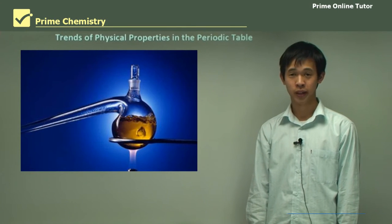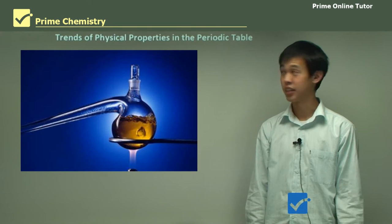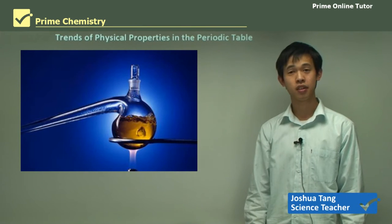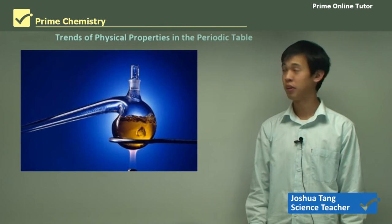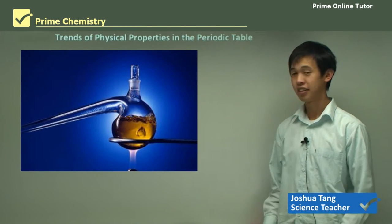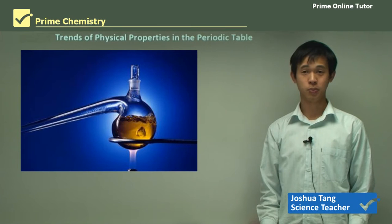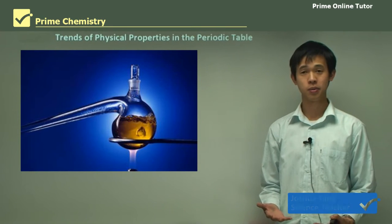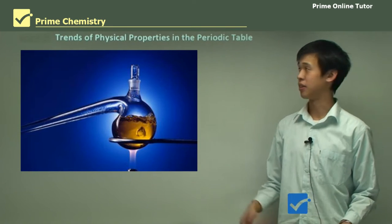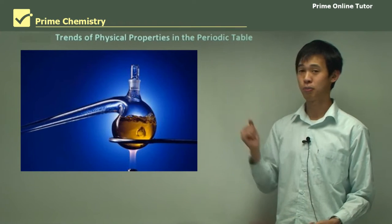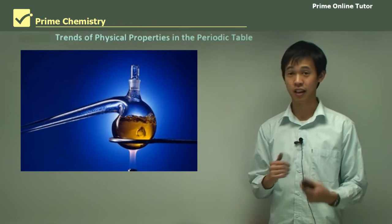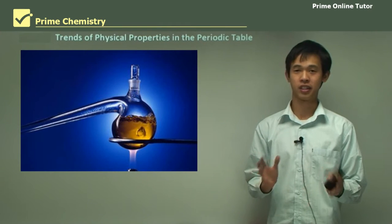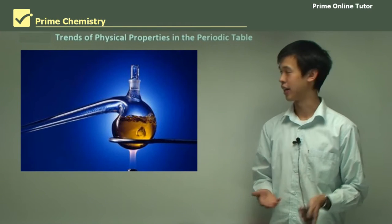Hello everyone, welcome again. Today we'll be talking about metals, the module. Last time we spoke about chemical trends in the periodic table, so today we'll be talking about the physical properties and how they vary when we move around the periodic table and look at different chemicals.